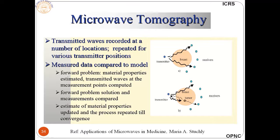A transmitter sends radio waves through the body to receivers. If there is no tumor, the waves go straight to the receiver. But if there is a tumor, there is reflection and scattering, and the energy received back indicates the presence of a tumor. The radiation reaching the receiver is reduced compared to the no-tumor case, allowing detection of the tumor with the help of microwaves.